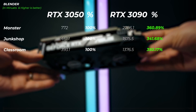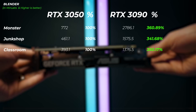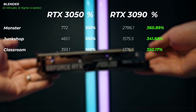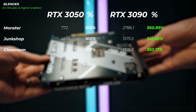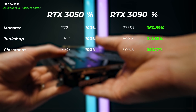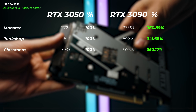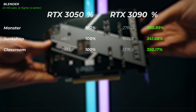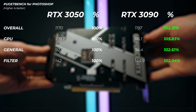Moving on to Blender 3.1, the RTX 3090 really shines: 360% better in the Monster scene, 340% better in the Junk Shop scene, and 350% better in the Classroom scene. These numbers are samples per minute, so higher is better.